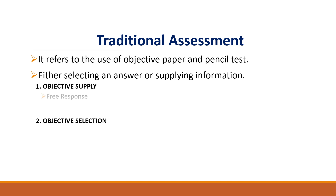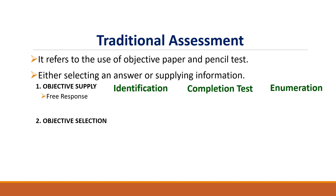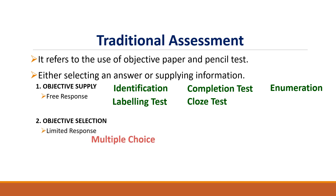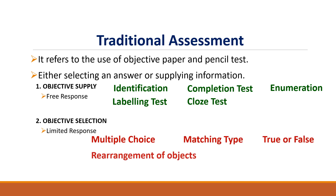Objective supply is free response, such as identification, completion test, enumeration, labeling test, and cloze test. While objective selection is having limited response, such as multiple choice, matching type, true or false, and rearrangement of objects.